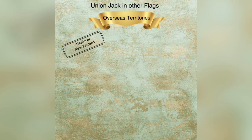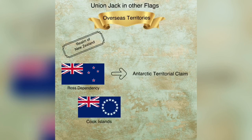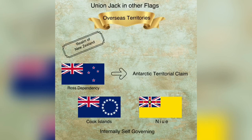There are also some territories under New Zealand with flags bearing the Union Jack. This includes Ross Dependency, which is the Antarctic territory of New Zealand, and Cook Islands and Niue, both of which are internally self-governing territories under the realm of New Zealand.